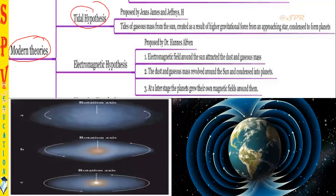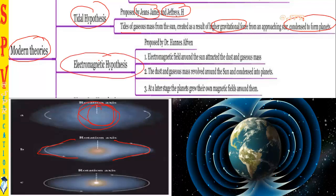The tidal hypothesis was proposed by James Jeans and Harold Jeffreys. They said tides of gaseous mass from the sun were created as a result of high gravitational force from an approaching star. Due to the continuous rotation of the sun, a tidal effect was produced, and a few particles moved away from the sun, slowly creating planetesimal particles or planets.